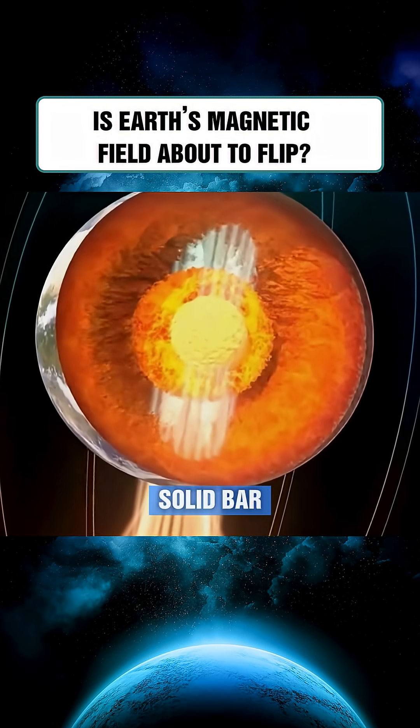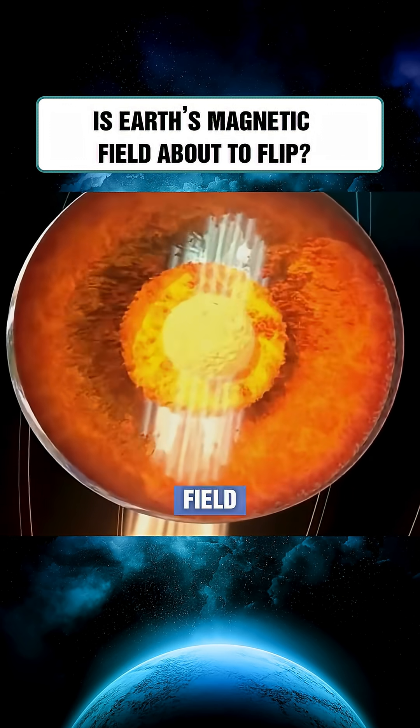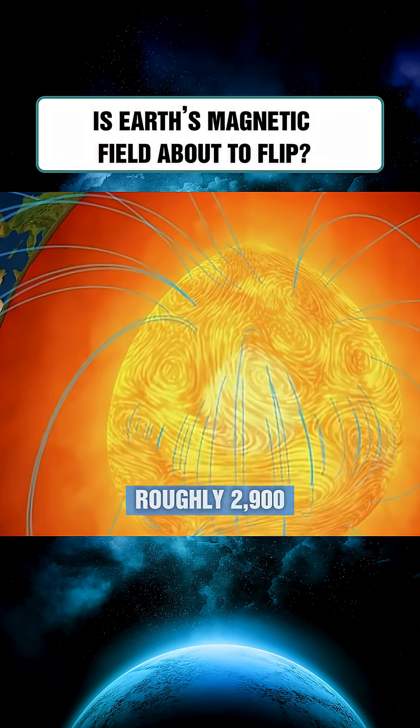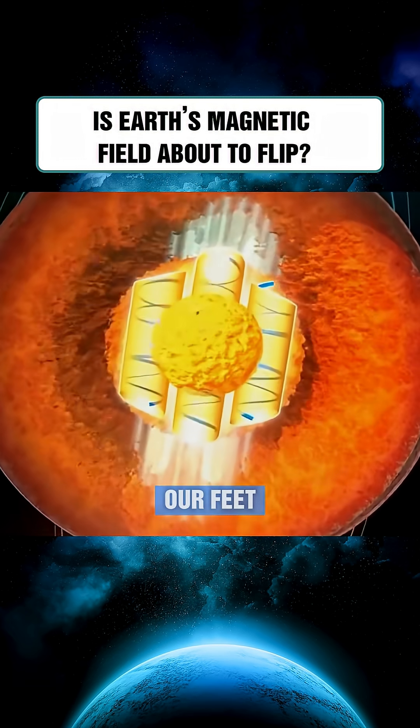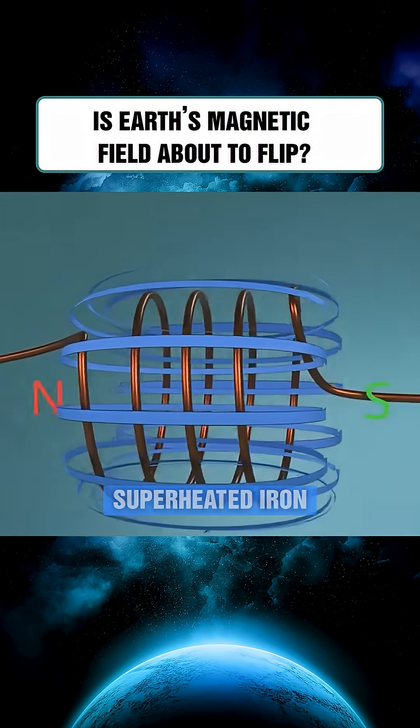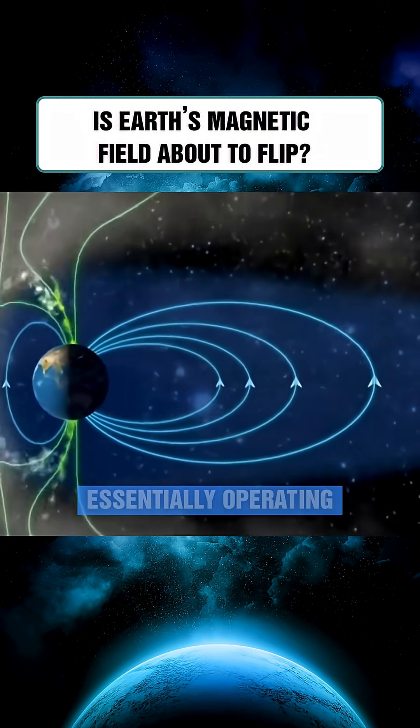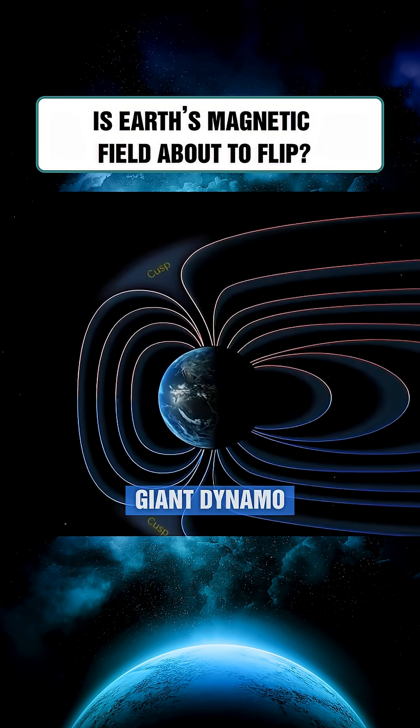Unlike a solid bar magnet, Earth's magnetic field originates from a sea of molten iron roughly 2,900 kilometers beneath our feet. This churning superheated iron creates massive electric currents as it moves with the planet's rotation, essentially operating like a giant dynamo, generating the global magnetic field that surrounds us.